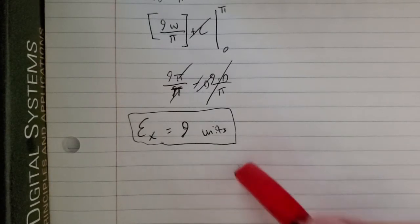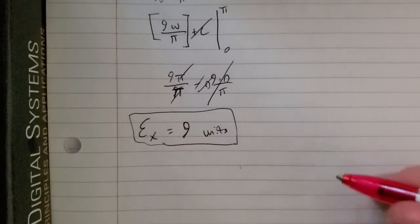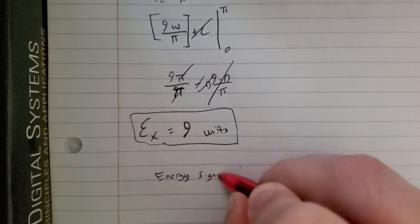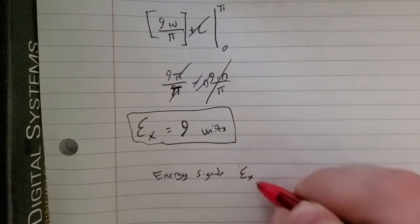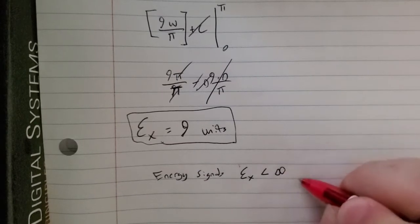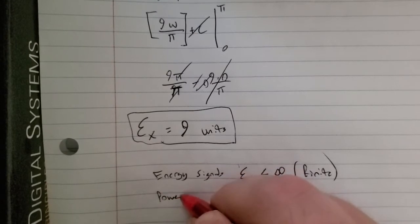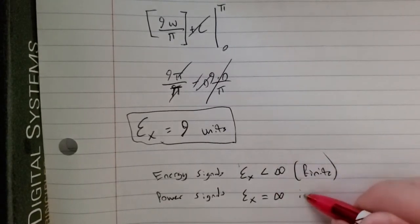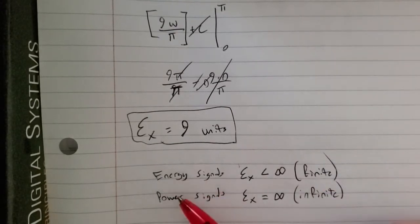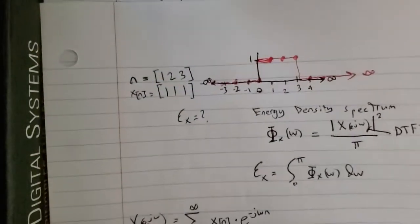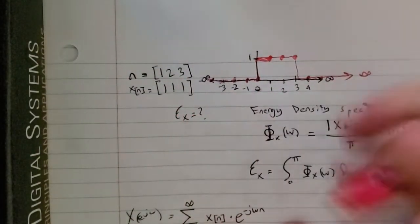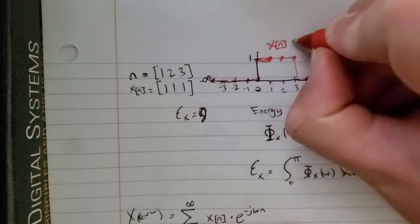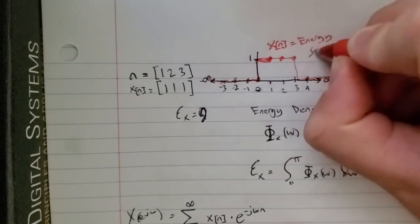There are two types of signals: energy signals and power signals. Energy signals have finite energy — energy less than infinity. Power signals have infinite energy. Since our sequence x[n] had finite energy of 9, it is an energy signal.